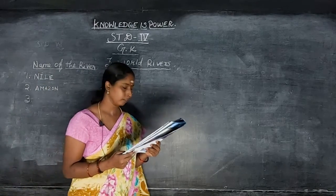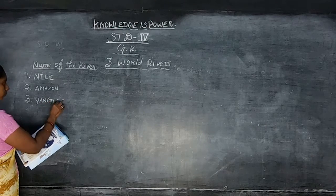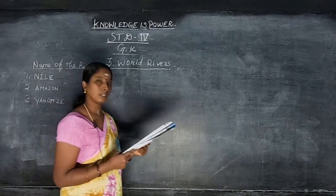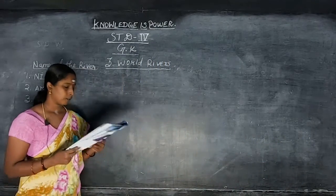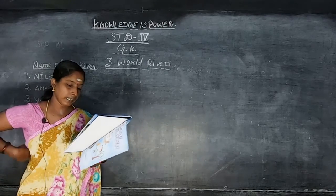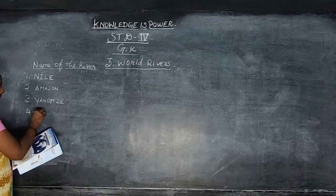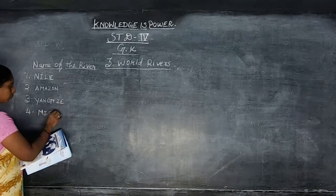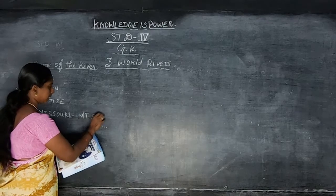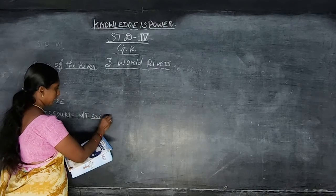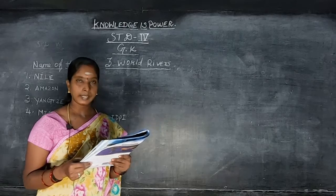Students, take page number 7. Third one: Yangtze. Continent: China. Length: 6,380 kilometers. Fourth one: Missouri-Mississippi. Continent: USA. M-I-S-S-O-U-R-I, M-I-S-S-I-S-S-I-P-P-I. Length: 5,959 kilometers.